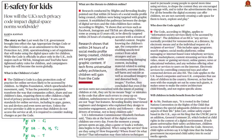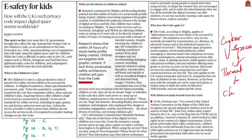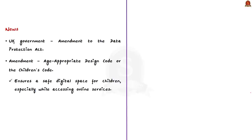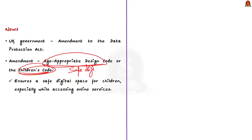Children have traditionally been one of the vulnerable sections of society. In the new age where cyberspace has become accessible to children, the cyberspace has also proven very unsafe for them. The UK government has made an amendment to the Data Protection Act and through this amendment has brought into effect the age-appropriate design code — also called the Children's Code — which ensures a safe digital space for children, especially while accessing online services. This article is an explainer of this Children's Code.